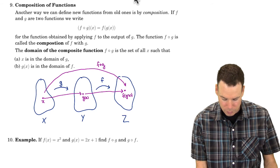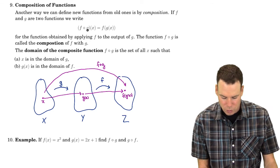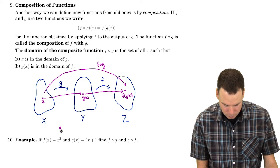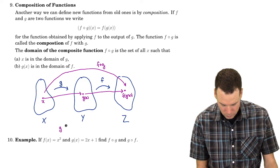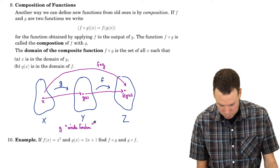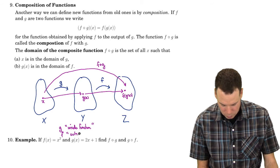There's a bit of terminology we use here. We refer to g as the inside function — it's the function that gets applied first in a composition — and we refer to f as the outside function.